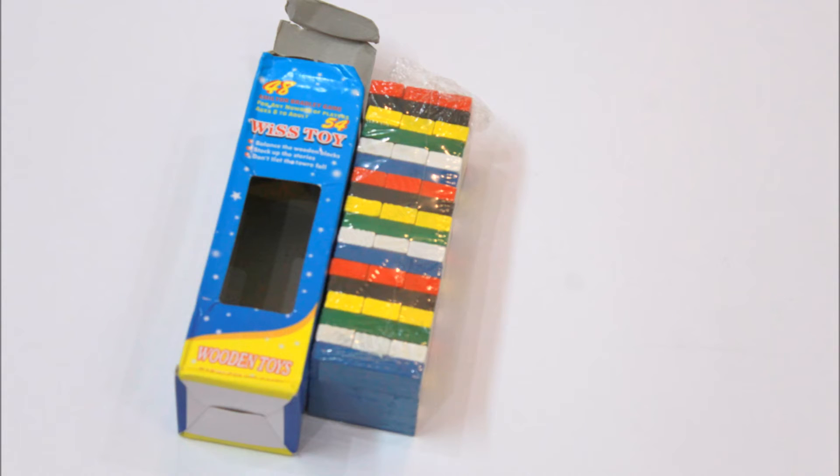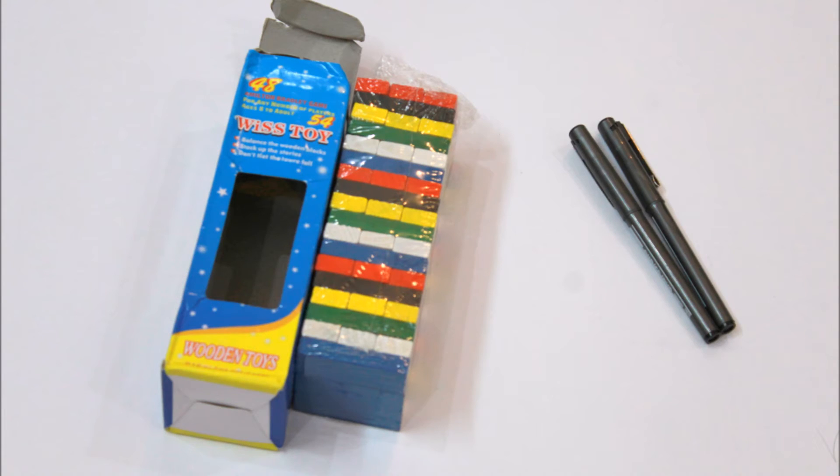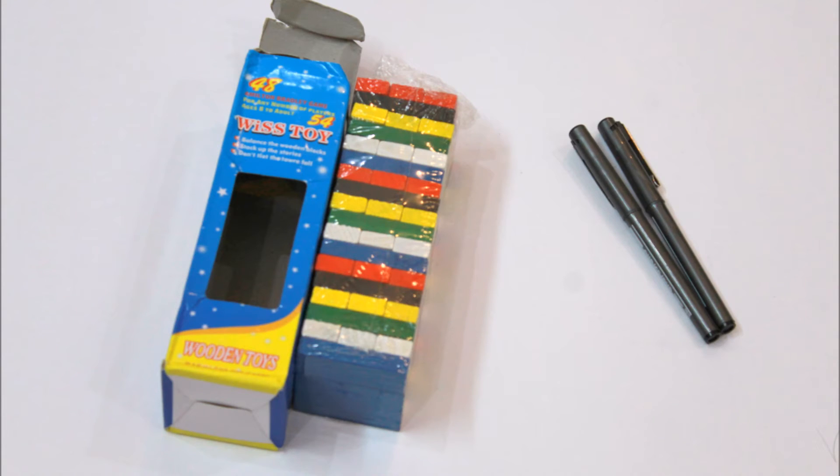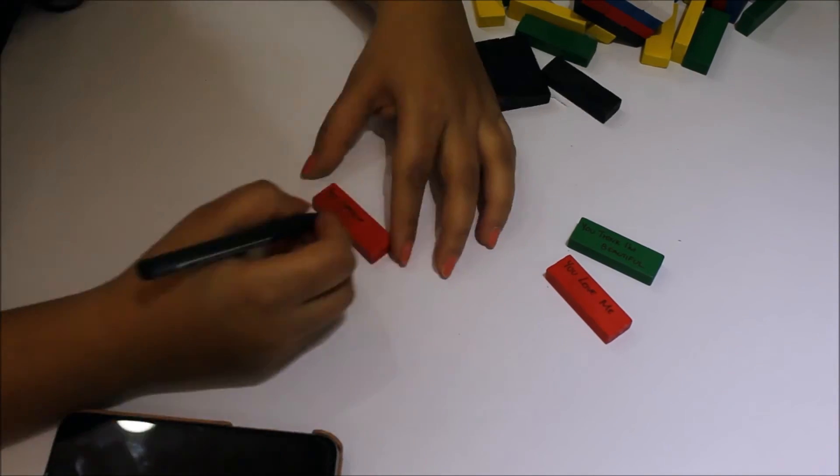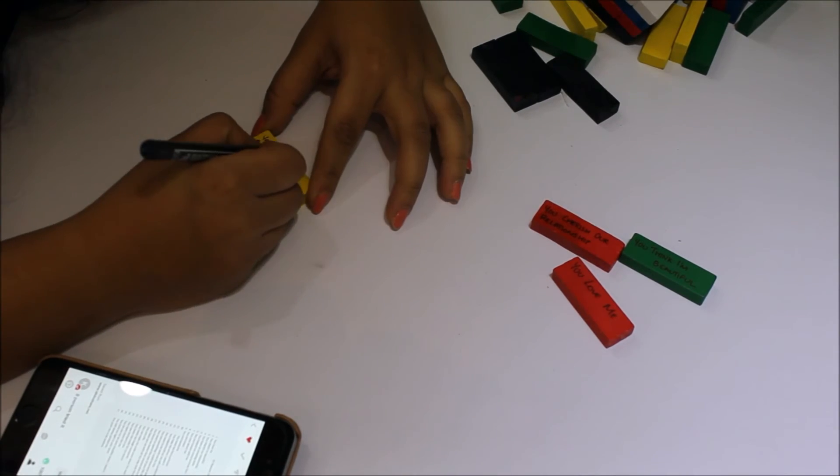For this, you'll require some wooden blocks or Jenga and some marker pens. Depending on whom you want to gift it, you can write some quotes regarding that or reasons why I love you sort of things. You can write one quote on one block.